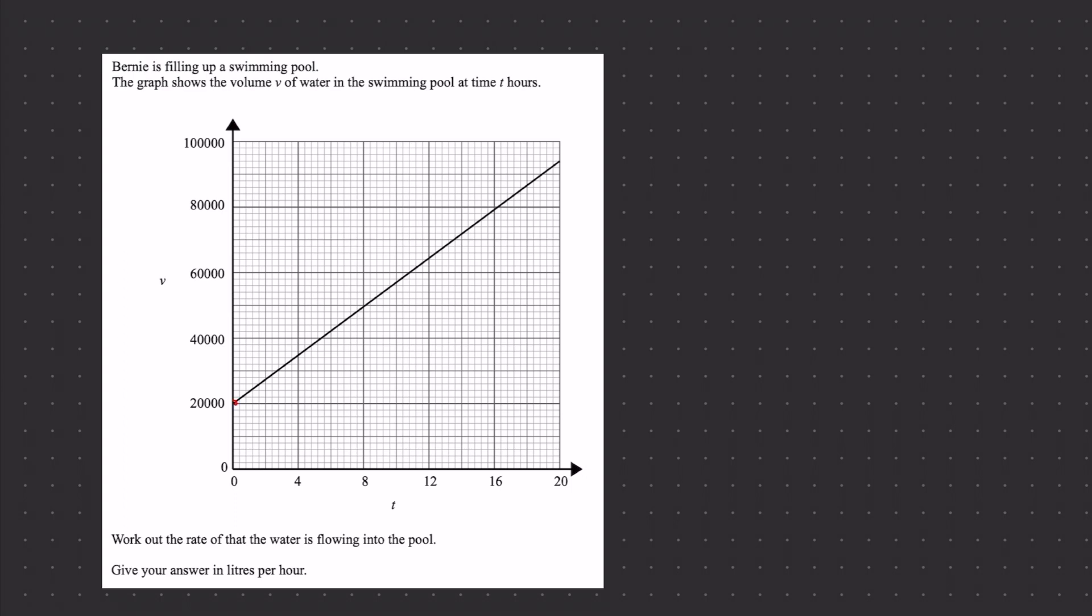That means I can just pick two points just like I normally do when I'm calculating a gradient. So this point is 0 and 20,000, and let's pick another point where it intersects the graph maybe at this point here. And if we follow this down we can see that that is about maybe 11 and 60,000.